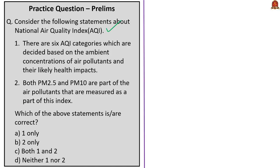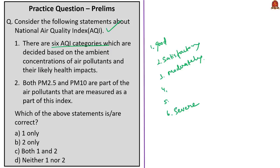This question is with respect to the National Air Quality Index. The first statement: there are six air quality index categories decided based on ambient concentrations of air pollutants and their likely health impacts — correct. The six categories are: Good, Satisfactory, Moderately Polluted, Poor, Very Poor, and Severe. The second statement: both PM2.5 and PM10 are among the air pollutants measured — correct. Around eight pollutants are checked: PM10, PM2.5, NO2, SO2, carbon monoxide, ozone, ammonia, and lead. The answer is option C: both one and two.